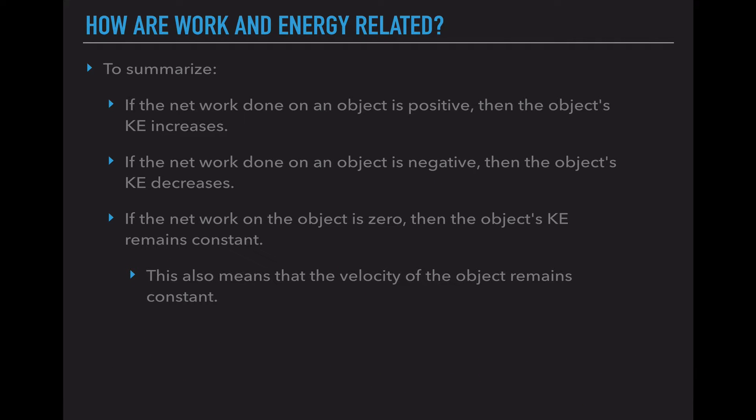So to summarize, if the net work done on an object is positive, then the kinetic energy increases, meaning you're speeding up. If the net work done is negative, the kinetic energy decreases. You are slowing down or coming to a stop. If the net work on an object is zero, the kinetic energy remains constant, which means that velocity also remains constant.